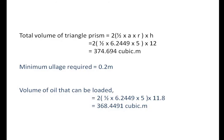So, total volume of triangular prism = 2 × (1/2 × a × r) × h. Here we multiplied by 2 because we have 2 triangles. So, just put the values: 2 × (1/2 × 6.2449 × 5) × 12. We have 374.694 cubic meter.